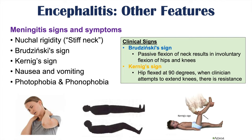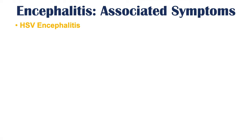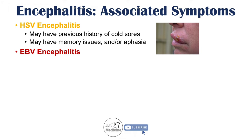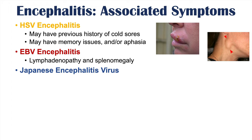There are associated symptoms depending on the underlying cause. In HSV encephalitis, patients may have a history of cold sores, and because HSV undergoes retrograde transmission infecting the temporal lobes, patients can have memory issues or aphasia. In EBV encephalitis, patients may have lymphadenopathy and splenomegaly. In Japanese encephalitis virus encephalitis, patients often have Parkinsonian features including tremors and shuffling gait, mimicking Parkinson's disease.